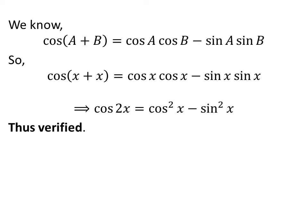x + x = 2x. So, cos(2x) = cos²(x) - sin²(x).